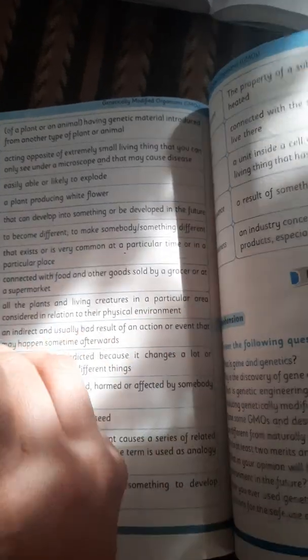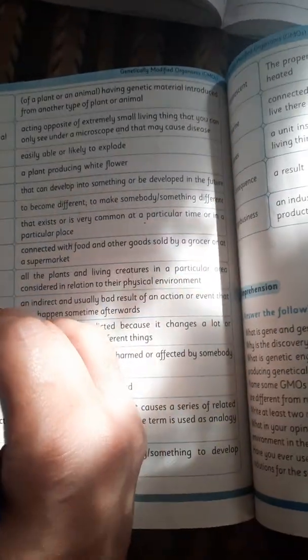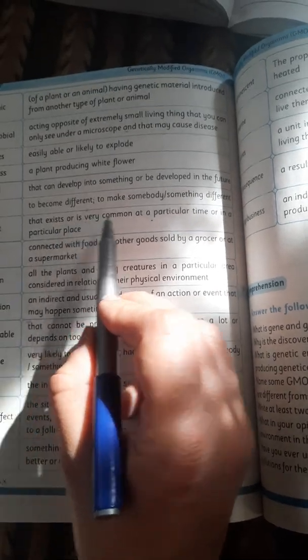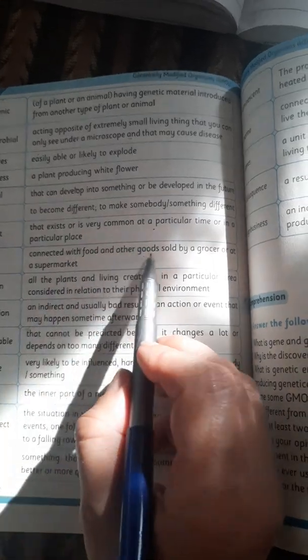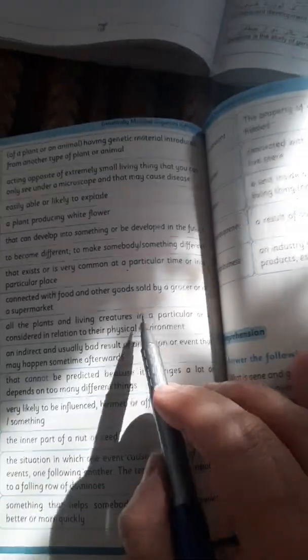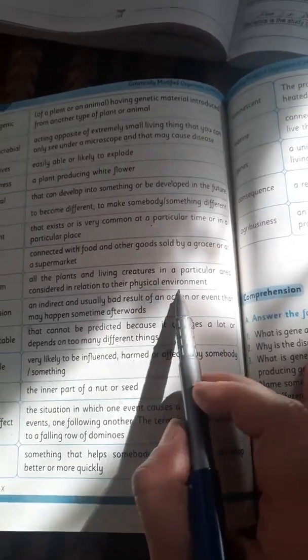Alter: to become different, to make somebody or something different, to change. Prevalent: that exists or is very common at a particular time or in a particular place. Grocery: connected with food and other goods sold by a grocer or at a supermarket. Ecosystem: all the plants and living creatures in a particular area considered in relation to their physical environment.